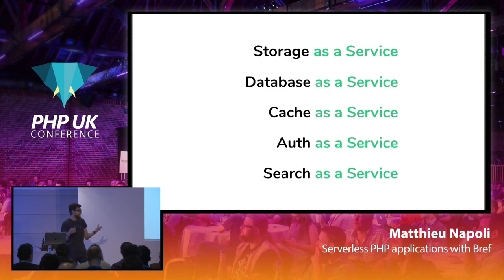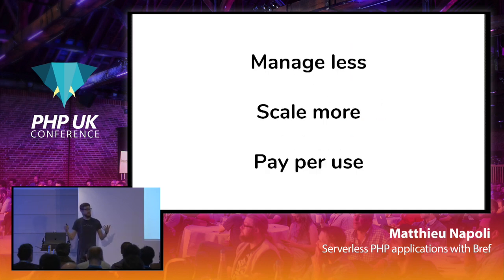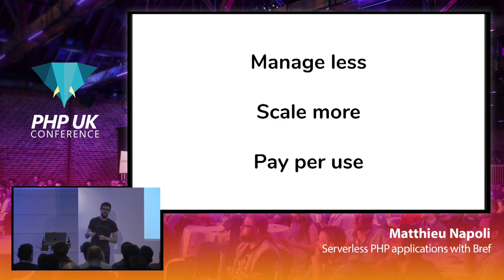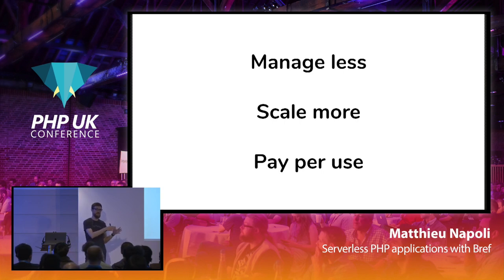You have caching as a service, authentication as a service — Auth0 is a good example where you just delegate authentication to an external service, or Amazon Cognito as well. Search as a service: instead of setting up Elasticsearch, you can use Algolia for your search. The idea behind all of that is that you have less to do. The long-term promise is that you can do less of the infrastructure and more of the development.